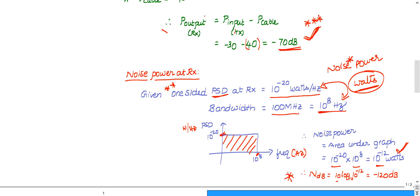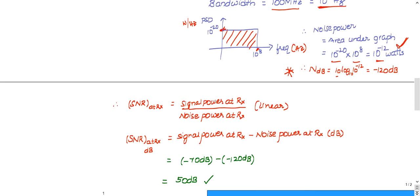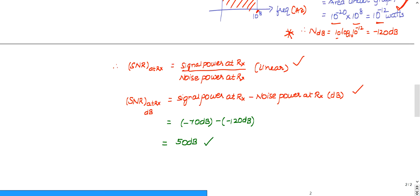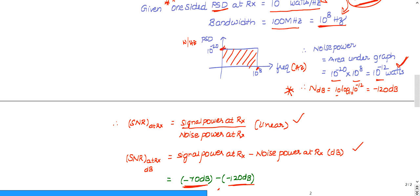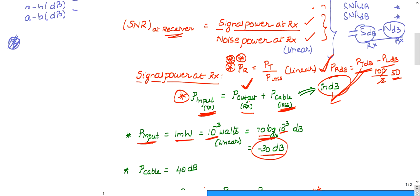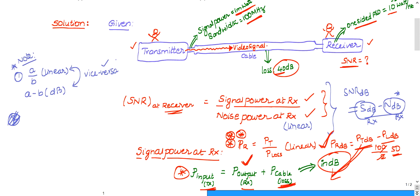Now we have both values. SNR in dB = signal power in dB minus noise power in dB = minus 70 minus (minus 120) = minus 70 + 120 = 50 dB. The answer is 50 dB. Each step has been explained clearly.